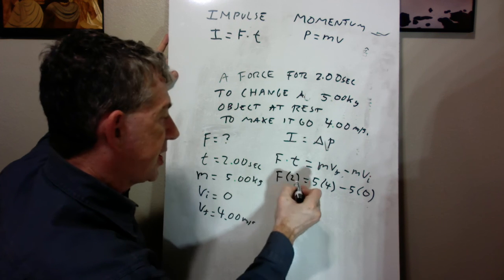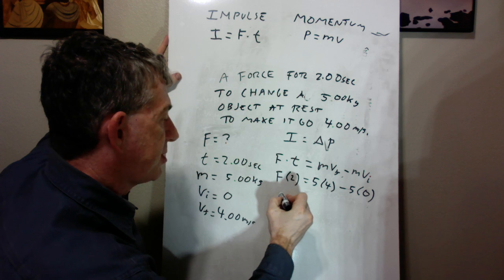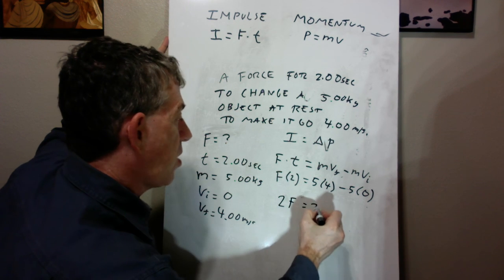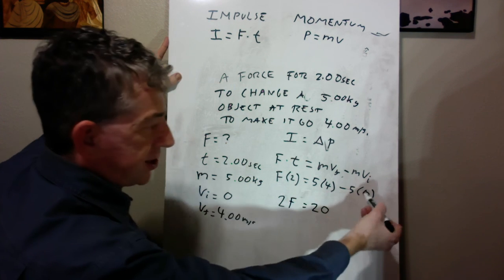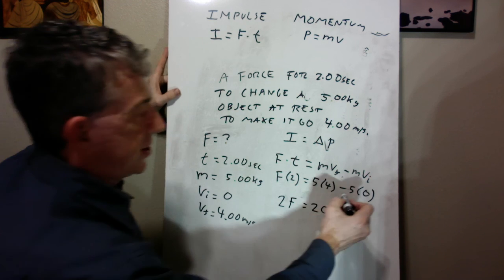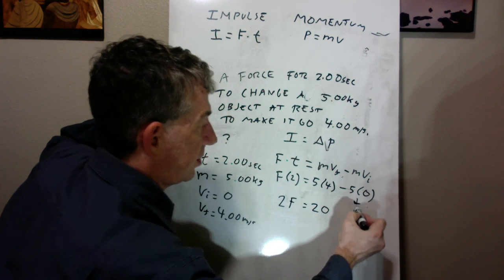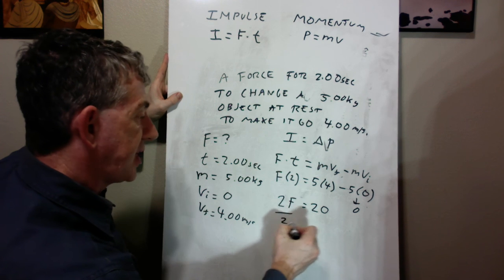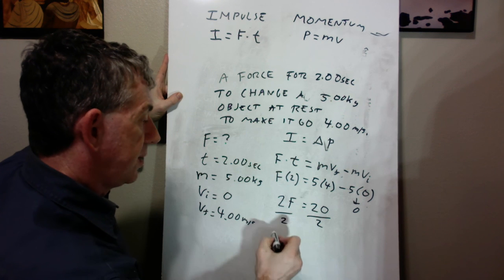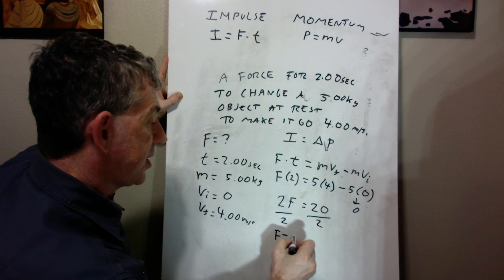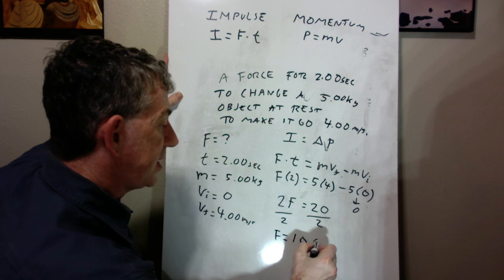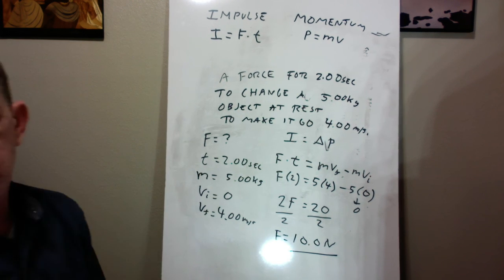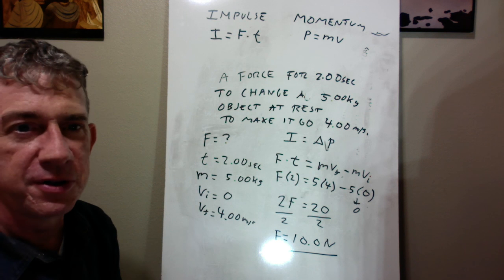So that means I'm going to change the order from F times two to two F equals 20 minus zero. This goes away because this is zero. And if we solve for this, I'm going to divide both sides by two. So the force that is going to be required to do that would be 10 newtons. That's my answer with the correct number of significant figures.